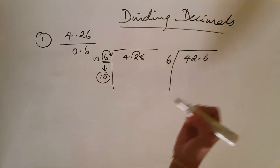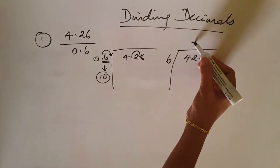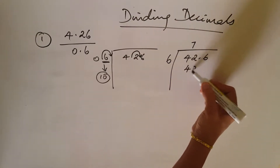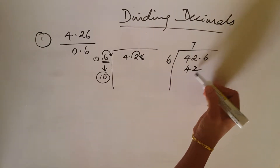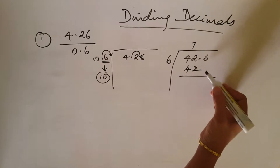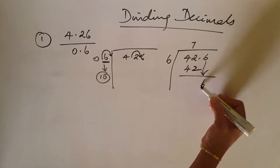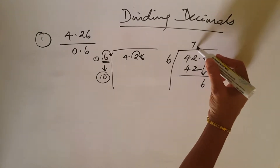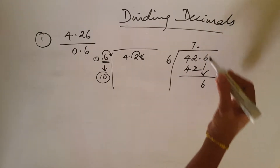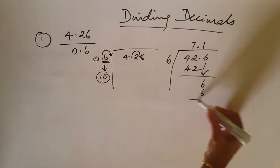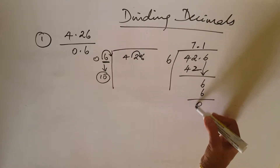Now dividing: 6 goes into 42 seven times giving 42, bring down 6, and 6 goes into 6 one time. Remainder is 0. So the answer is 7.1.